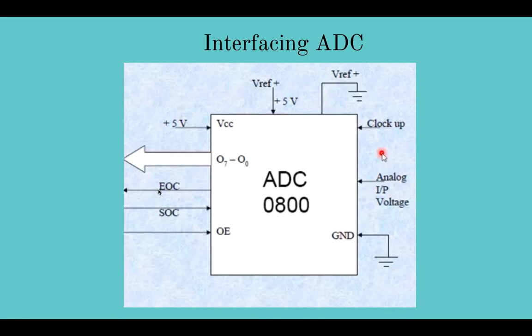EOC is the end of conversion. From this pin the ADC sends a signal to the microprocessor that it is ready to send the converted input. Output enable is used to enable the output from the output lines. From here the microprocessor tells the ADC that it is ready to take in the output. And here the output is given to the microprocessor.